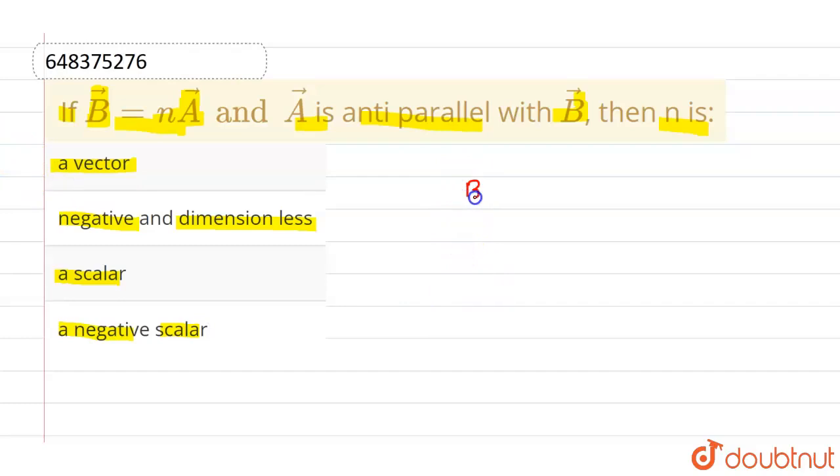Now, if B vector is equal to nA vector, this thing is given, and B vector and A vector are anti-parallel.